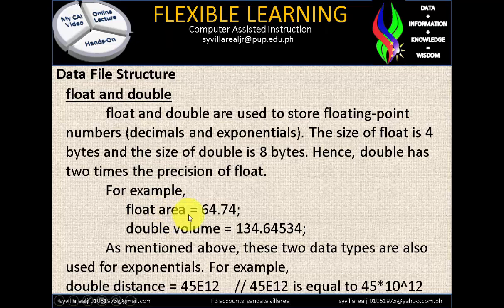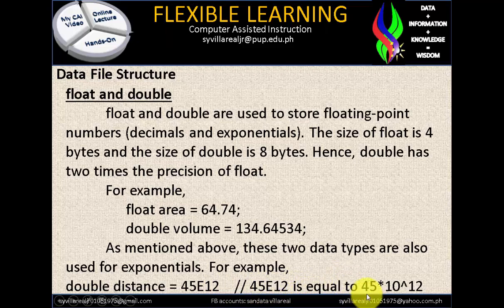For example, float area = 64.74, and double volume = 134.64534. These two data types are also used for exponentials. For example, double distance = 45E12. 45E12 is equal to 45 times 10 raised to 12. E stands for exponent in programming — that's why you'll notice the letter E in variable declarations.